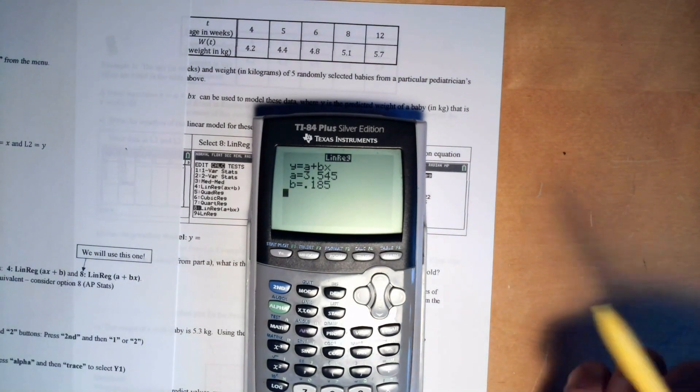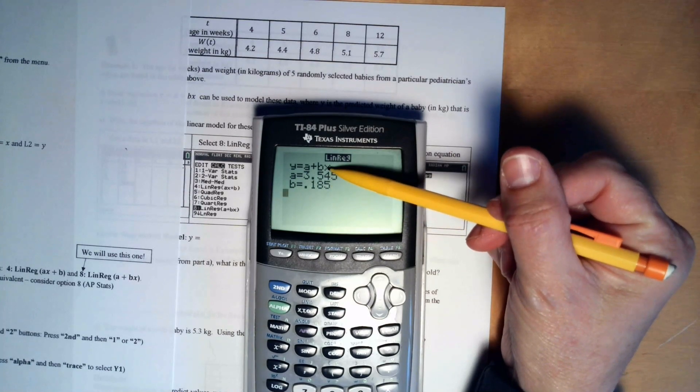So we have to go down and we want to store this equation of a line that it's going to give me that goes through my data in y1. So remember alpha trace to grab y1. And there it is and calculate. So there's the equation of a line. Just be careful, this is the y-intercept and here's your slope right there.